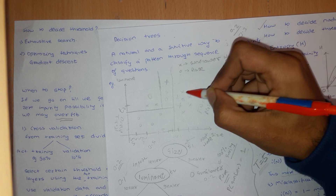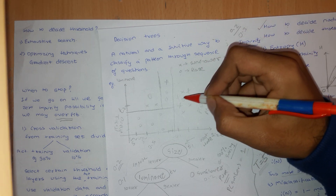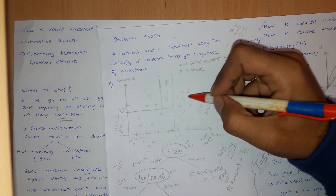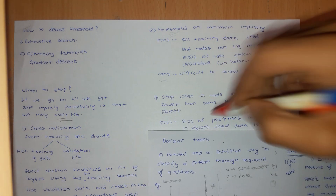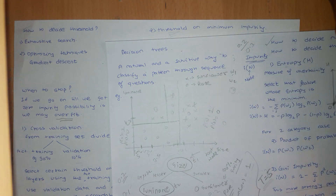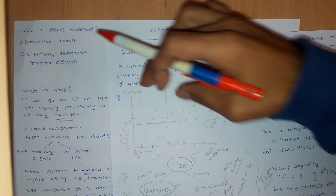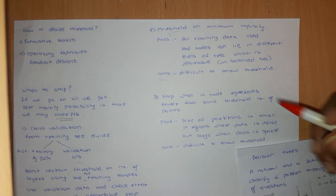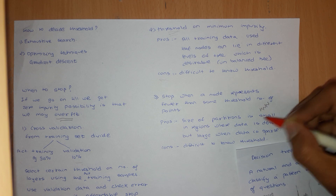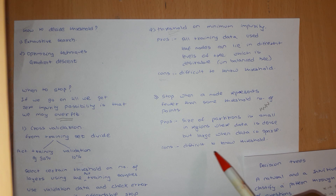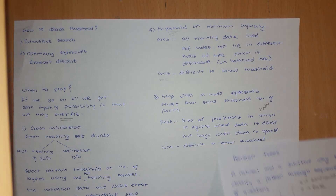In a dense region, the region boundaries will be close to each other. In a sparse region, the separation will be large. This is analogous to the KNN (K-Nearest Neighbor) method, which behaves similarly. The con is that it is difficult to know the right threshold. That was all about decision trees — thank you so much for watching.